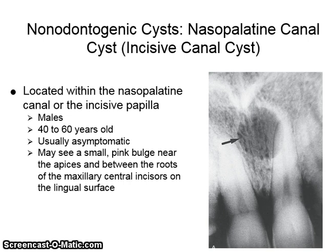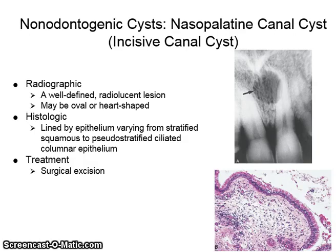The nasopalatine canal cyst, or incisive canal cyst, is located within the nasopalatine canal or the incisive papilla. It generally occurs in males between 40 and 60 years old, is usually asymptomatic, and you may see a small pink bulge near the apices and between the roots of the maxillary central incisors on the lingual surface. The cyst is a well-defined radiolucent lesion and may be oval or heart-shaped. Histologically, it is lined by epithelium varying from stratified squamous to pseudostratified ciliated columnar. Treatment is by surgical excision.